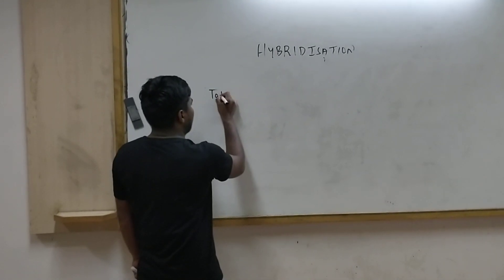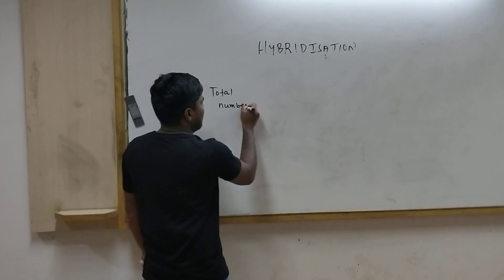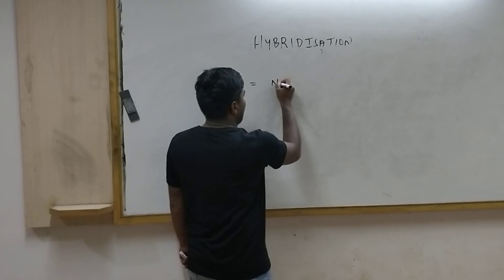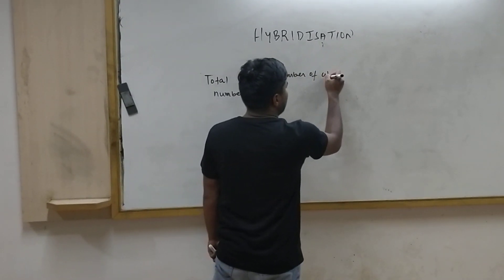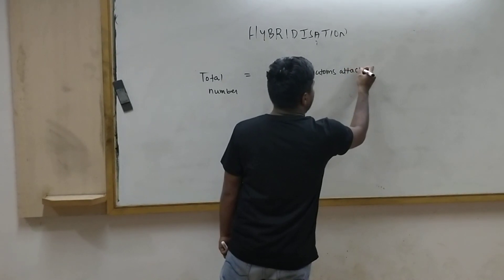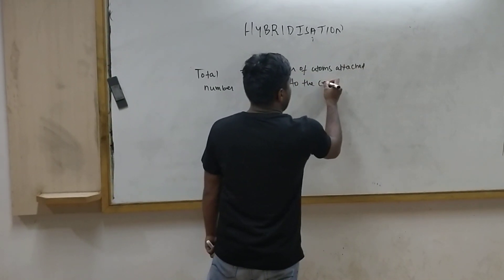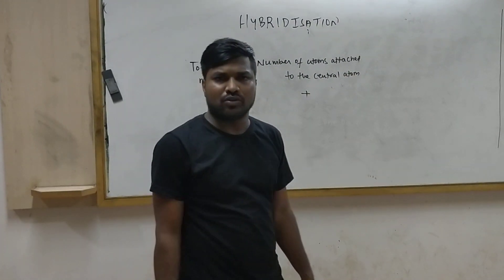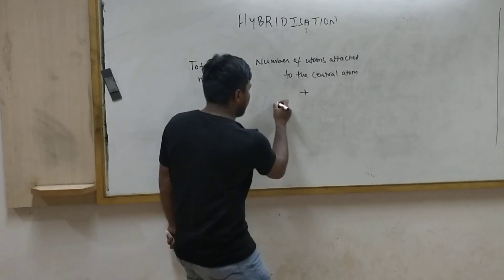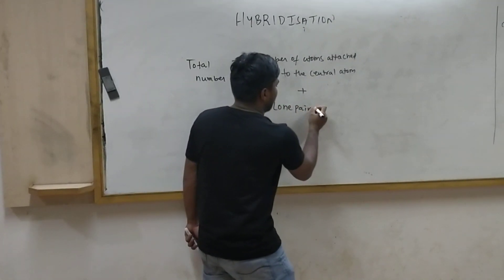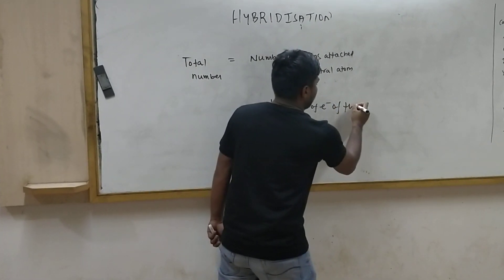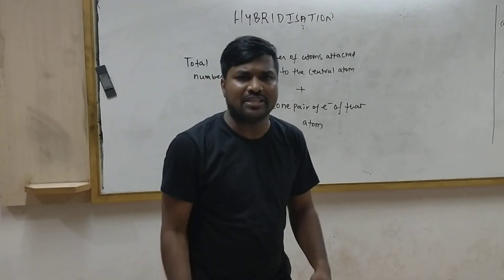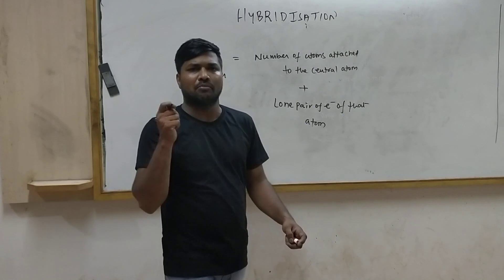The formula is: Total Number equals the number of atoms attached to the central atom, plus the lone pairs of electrons of that atom. If you know these two things, you can easily calculate and identify the hybridization.